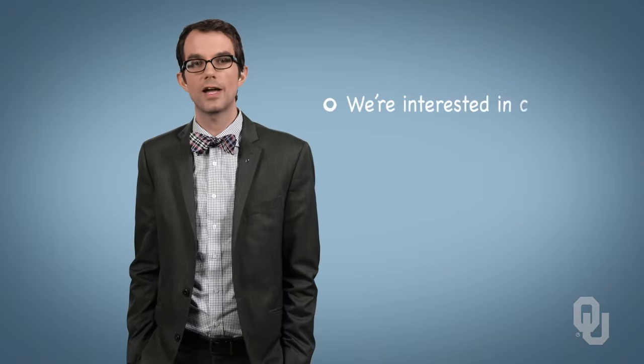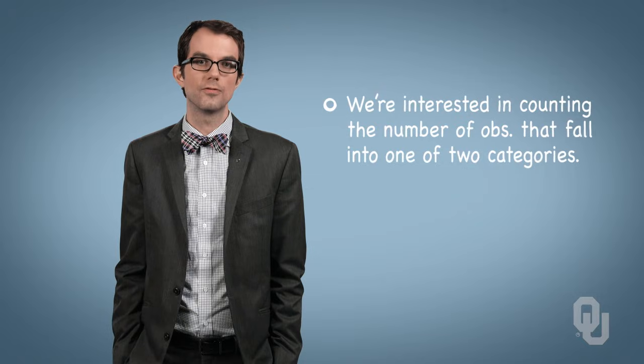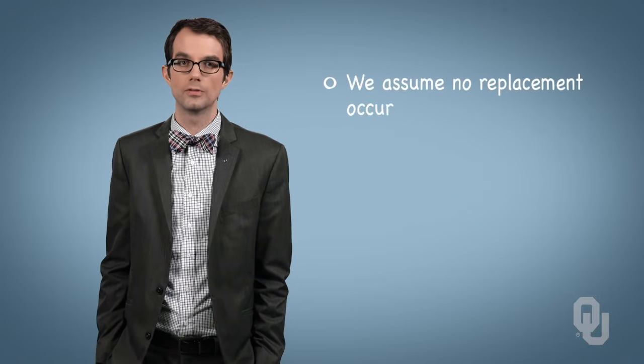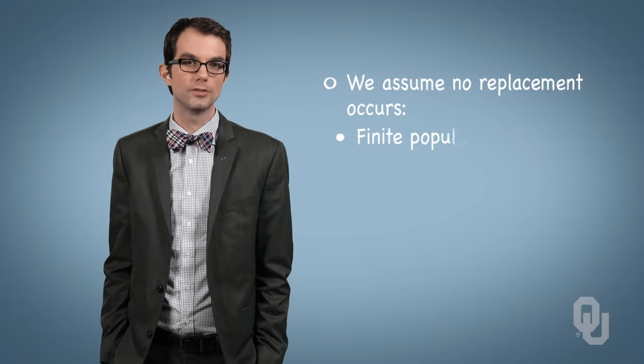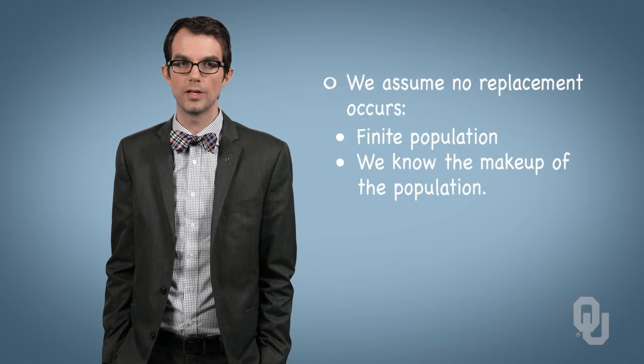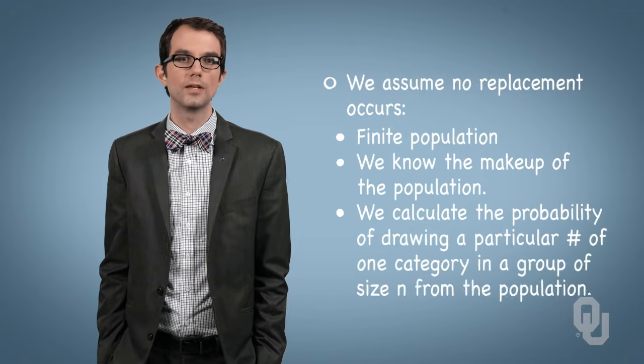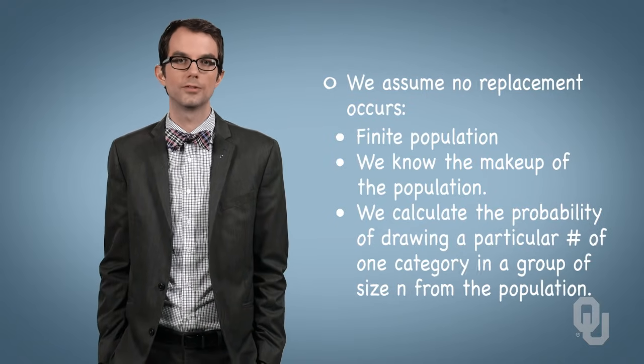To recap, like the binomial distribution, we're interested in counting the number of observations that fall into 1 of 2 categories. Unlike the binomial distribution, we assume no replacement occurs. We have a finite population. We know the exact makeup of that population with respect to the 2 categories. And we calculate the probability of drawing a particular number of 1 category in a group of size n from the population.